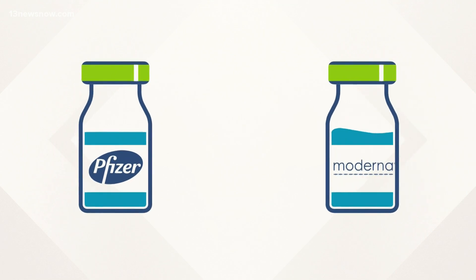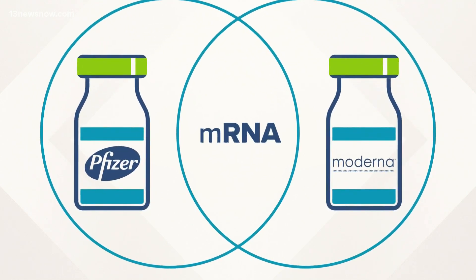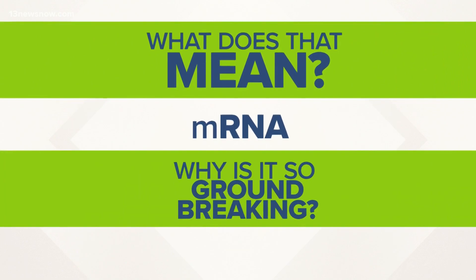Both Pfizer and Moderna developed their coronavirus vaccines using mRNA, but what exactly does that mean and why is it so groundbreaking?